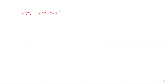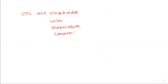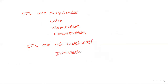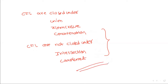In summary, context-free languages are closed under union, concatenation, and Kleene closure. Context-free languages are NOT closed under intersection and complement. These are the closure properties of context-free languages. Thank you.